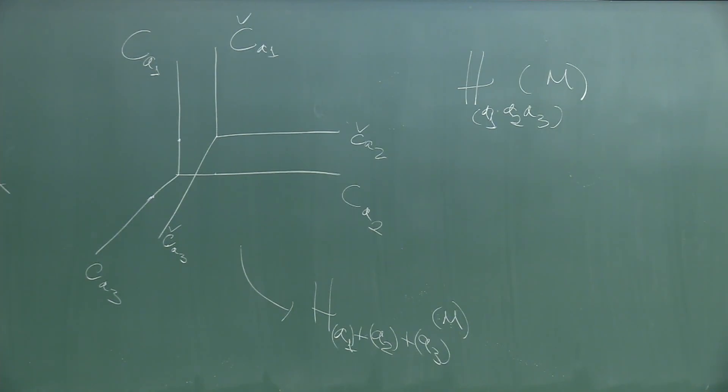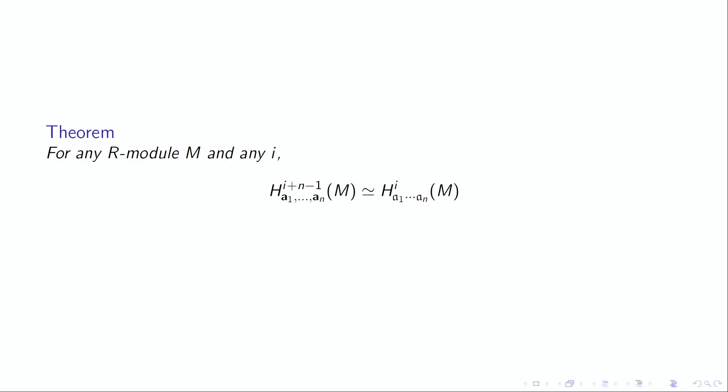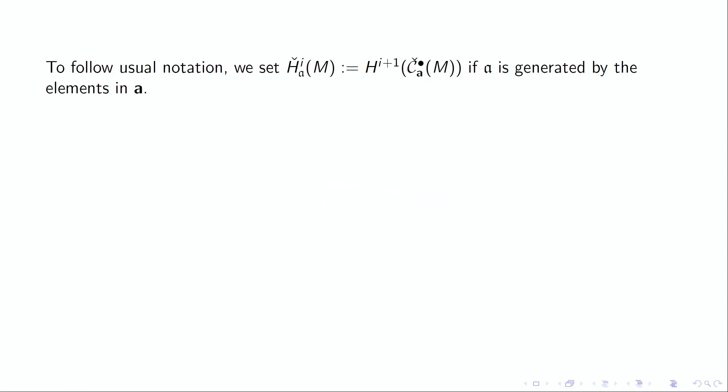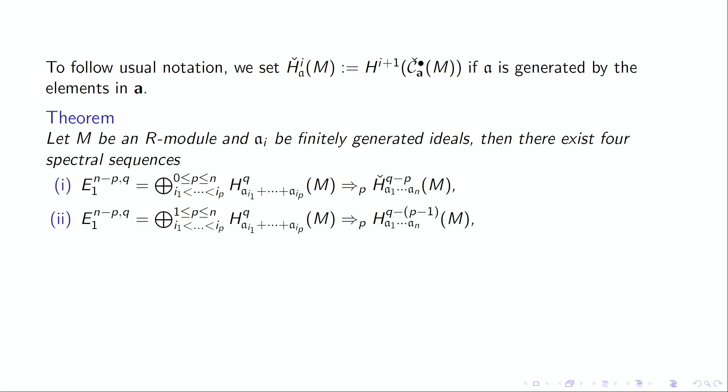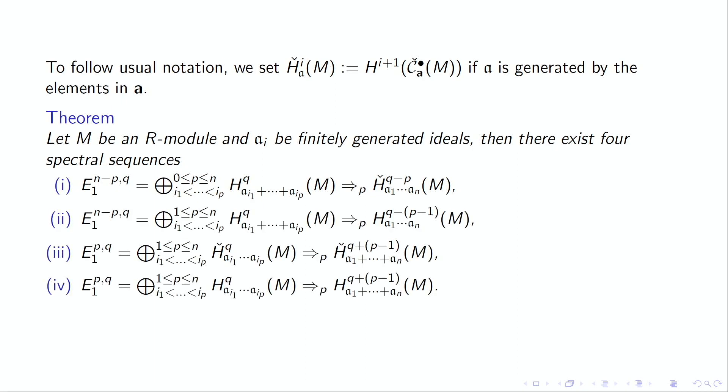It's known for the Noetherian case for two ideals - we can see this in Brodmann and Sharp. They have some exercises there, but not in general as this here. Now we put together this theorem with the other ones - all four spectral sequences. We introduce this notation with the caron on the H. So we have now four spectral sequences in cohomology. For Mayer-Vietoris spectral sequences, the second one is that of Lyubeznik. Now here the ring doesn't need to be Noetherian because we avoid using delta functors and other stuff. The other one in my thesis is the third one.